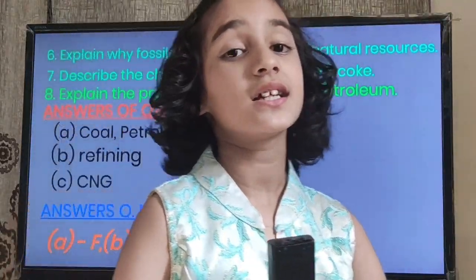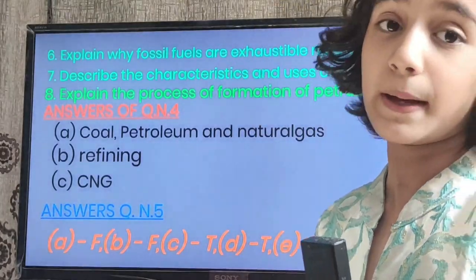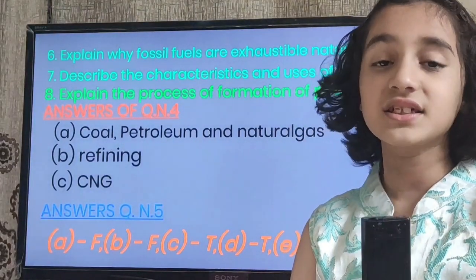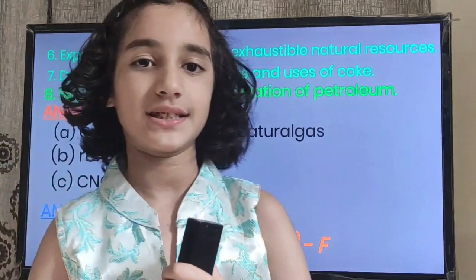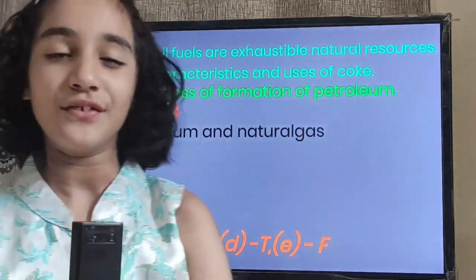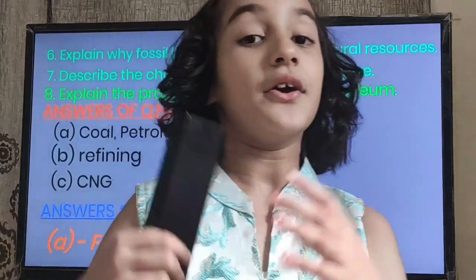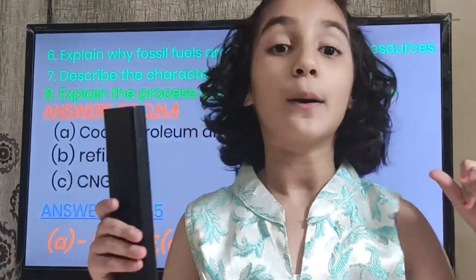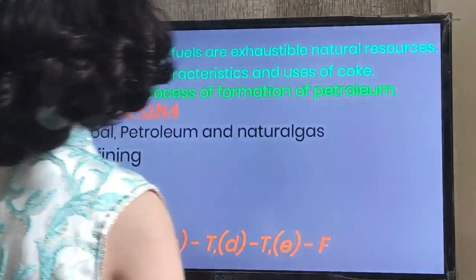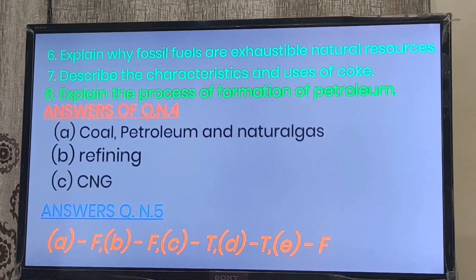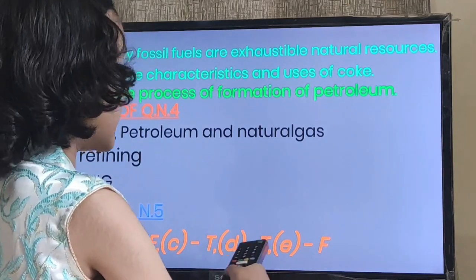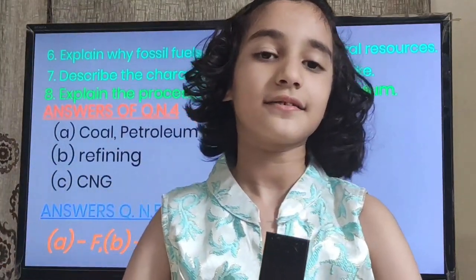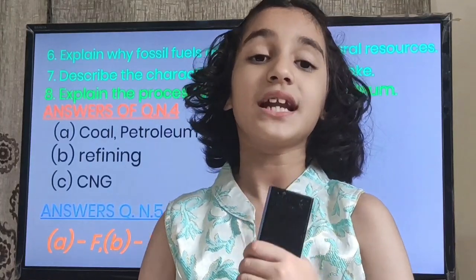Now we are going to check the answers of the fill-ups and true-false. Answers of question number 4: A — coal, petroleum and natural gas. We are right. Number 2 — refining. We are right. Number 3 — CNG. The full form of CNG is compressed natural gas. We are right. Answers of question number 5: A is false, B is false, C is true, D is true, and E is false. We are right. Thank you for watching — like and subscribe to my channel.